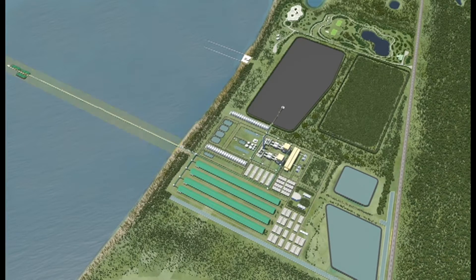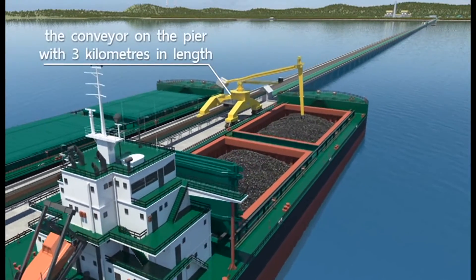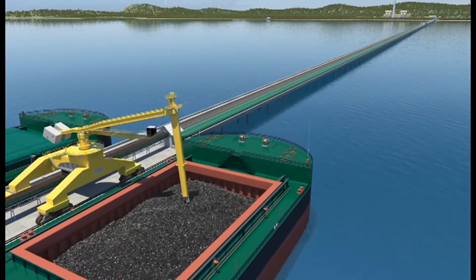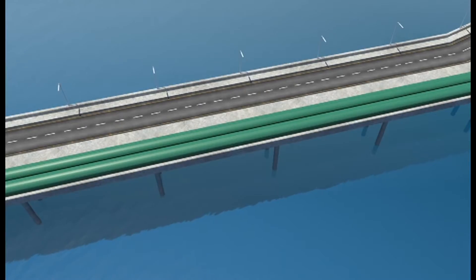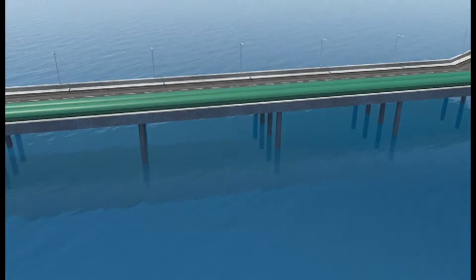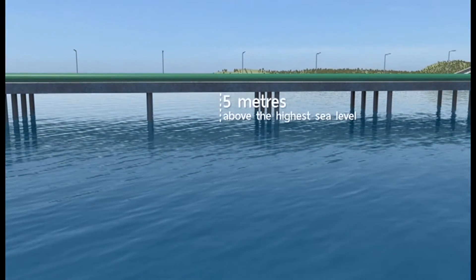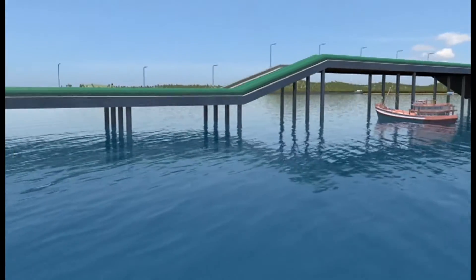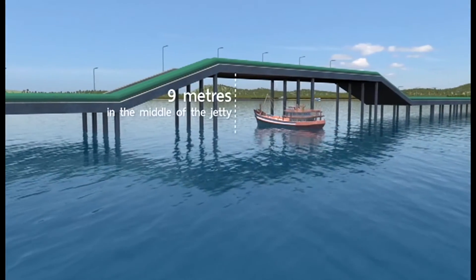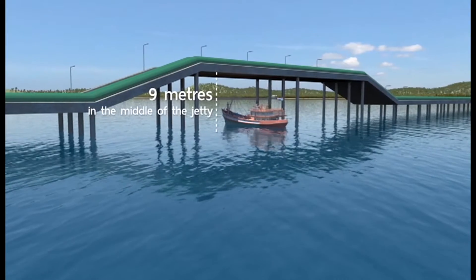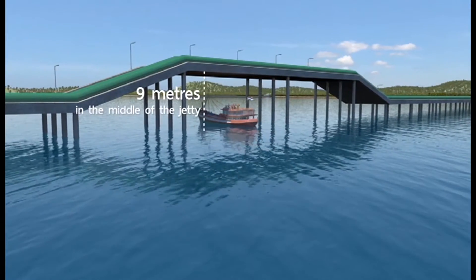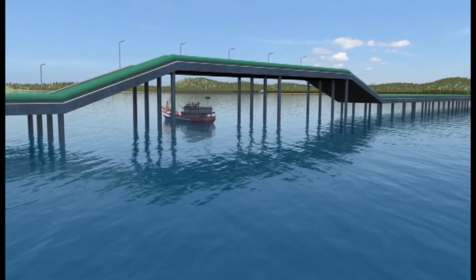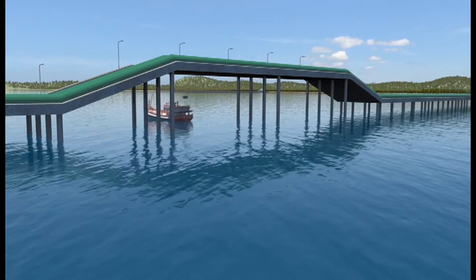The co-receiving jetty is designed to be 3 km long. The height of our port is 5 meters above the highest sea level. In the middle of the jetty, the height will be escalated to 9 meters for the fishing boats to pass under the center of the terminal. The coal will be transported to stockpile through closed system coal conveyor, which will be constructed on the jetty.